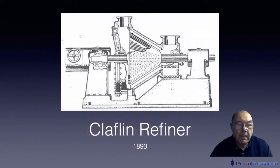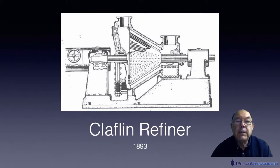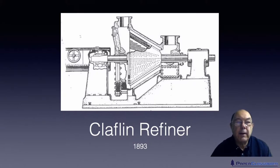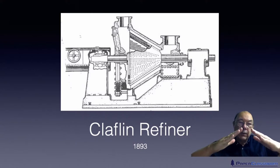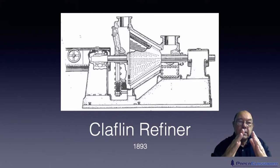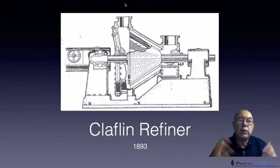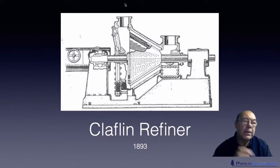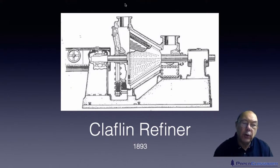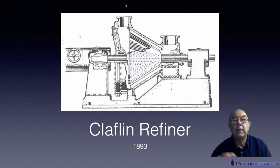Moving on, in 1893 George Claflin, another American, invented the Claflin refiner. It's a slight modification of the Jordan refiner — all he did was increase the angle of the cone from 15–17 degrees to 60 degrees. Stock still comes in at the narrow end, gets trapped between the two sets of bars, and is ejected from the wide end. Claflin refiners are said to be slightly better at fibrillating fibres, while Jordan refiners are said to be slightly better at cutting.